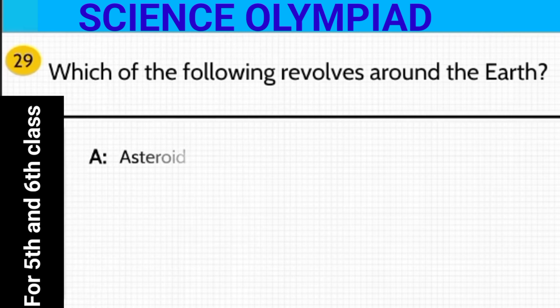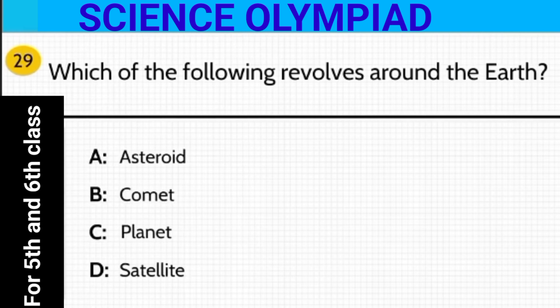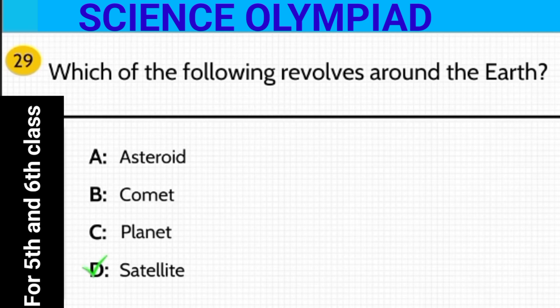Which of the following revolves around the earth? Is it an asteroid, comet, planet, or satellite? The answer is satellite. The natural satellite which revolves around the earth is the moon.